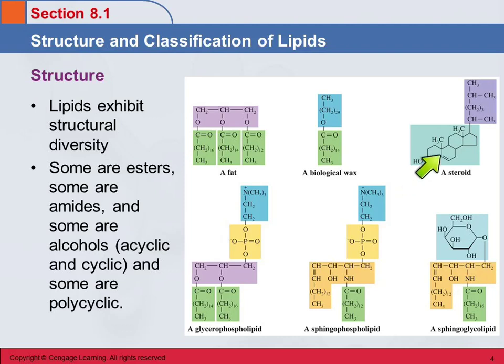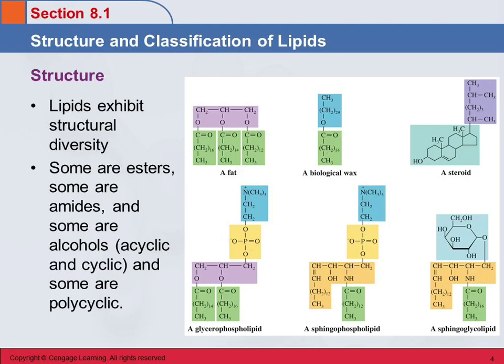We have cyclic compounds and acyclic compounds, and this one's actually polycyclic. So there's just a lot of variation in lipids — all of these are lipids.